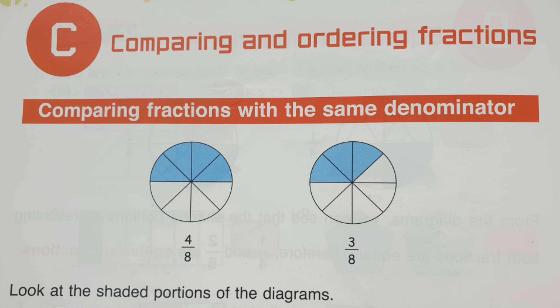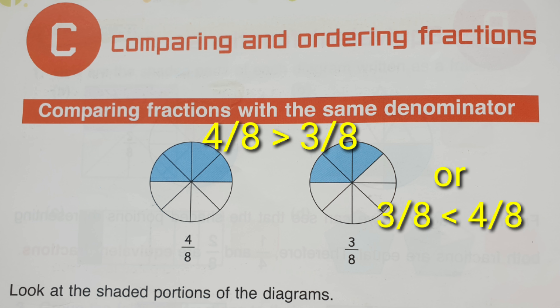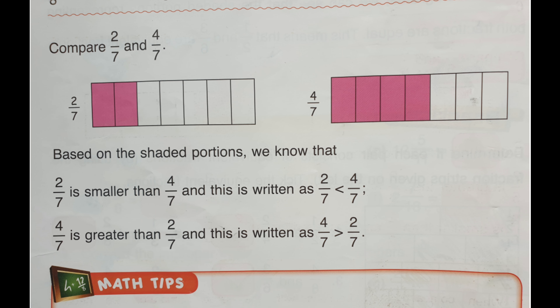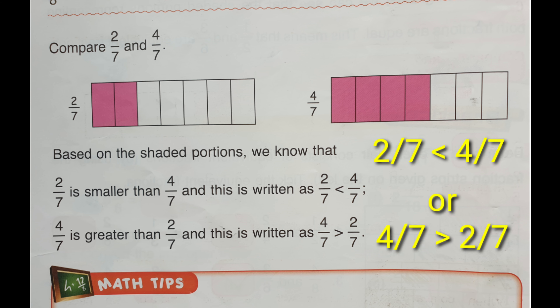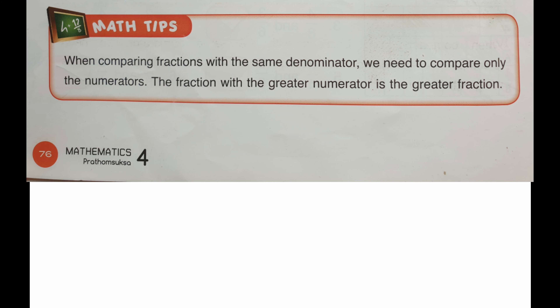Look at the shaded portions of the diagrams. Four eighths is greater than three eighths, or three eighths is smaller than four eighths. Number two: compare two sevenths and four sevenths. Based on the shaded portions, two sevenths is smaller than four sevenths. Remember: when comparing fractions with the same denominator, we compare only the numerators. The fraction with the greater numerator is the greater fraction.